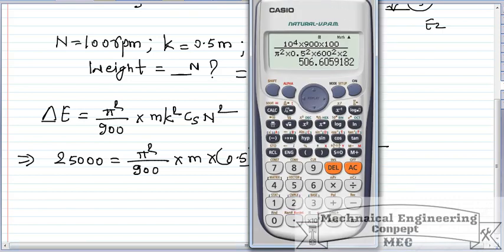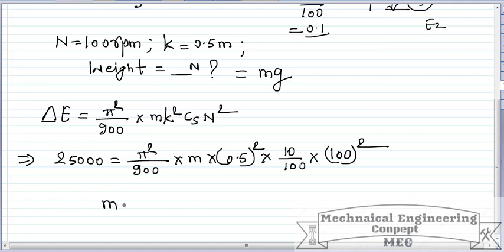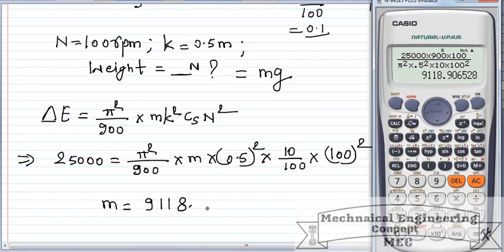Let's calculate this. 25,000 times 900 times 100 divided by pi squared times 0.5 squared times 10 times 100 squared. The mass m comes out to be 9118.90 kg.